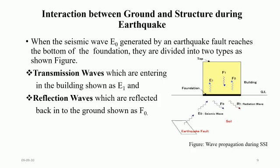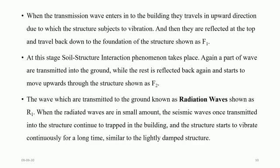When the seismic wave E0, generated by an earthquake fault, reaches the bottom of the foundation, it is divided into two waves: transmission waves represented as E1 and reflection waves represented as L0. When the transmission wave enters into a building, it travels upward through the structure, causing vibration, and is then reflected at the top, traveling back down to the foundation shown as F1. At this stage, the soil-structure interaction phenomenon takes place. Part of the waves are transmitted into the ground, while the rest is reflected back upward through the structure, shown as F2. The waves transmitted to the ground are known as radiation waves, shown as R1.